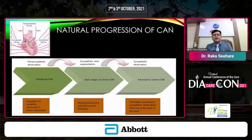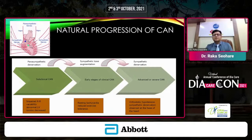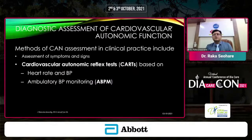When sympathetic tone augmentation occurs, it represents the early clinical stage of cardiac autonomic neuropathy, presenting with resting tachycardia and reduced exercise tolerance. Subsequently, sympathetic denervation occurs, and the patient develops orthostatic hypotension because all the sympathetic nerves that support the fight-or-flight response have been denervated.